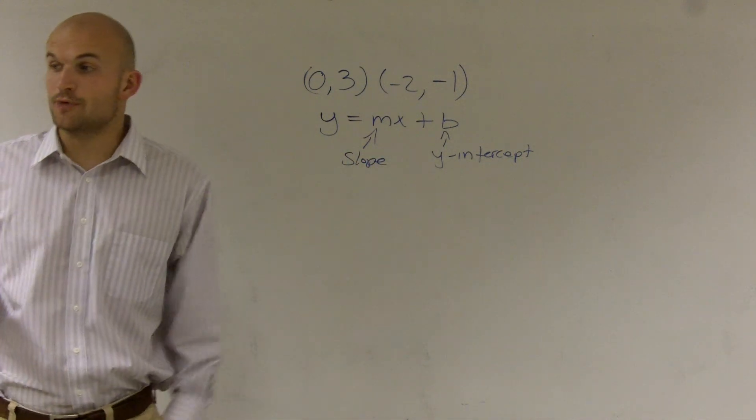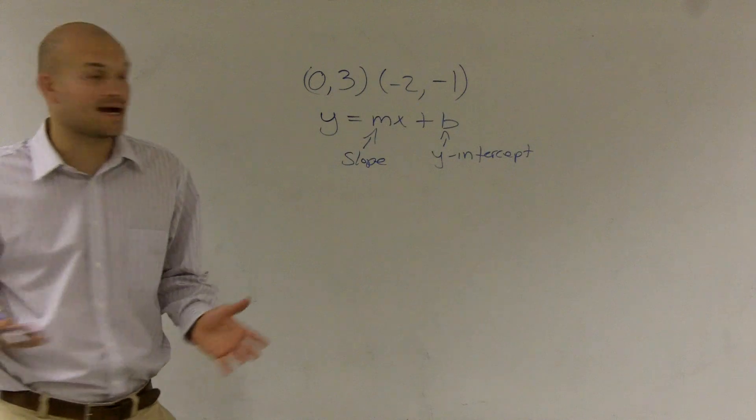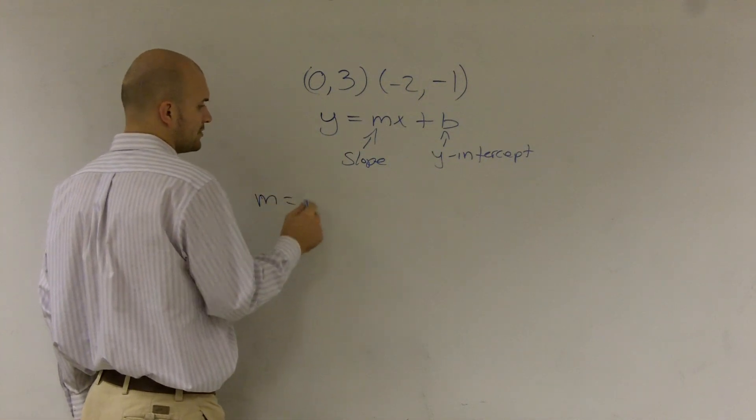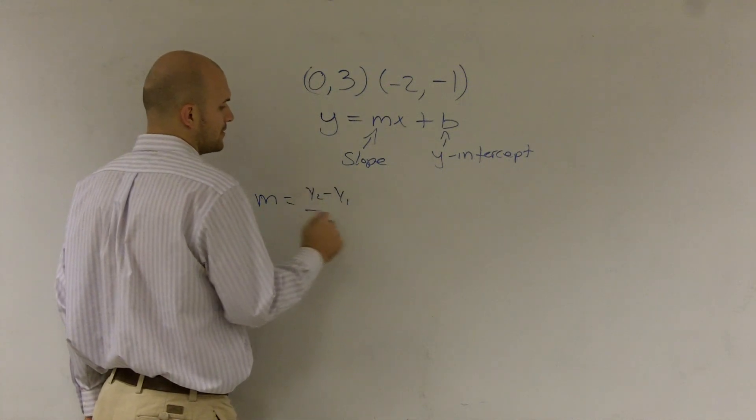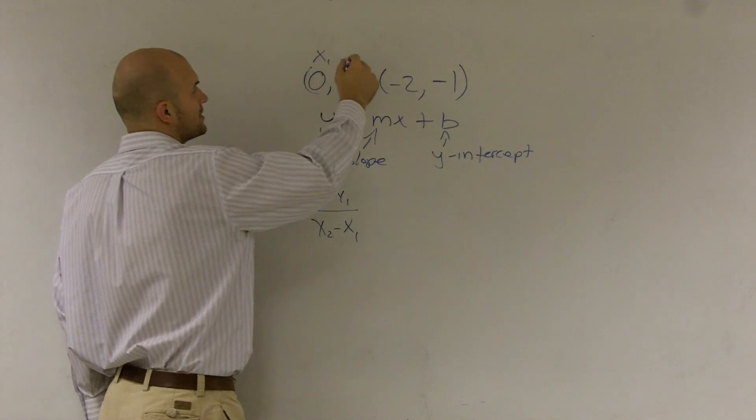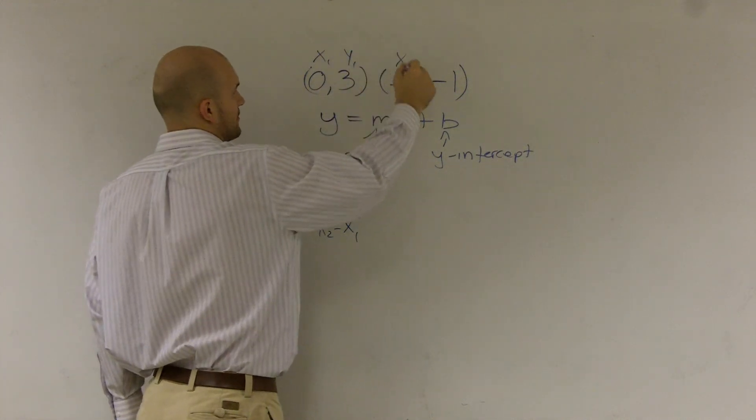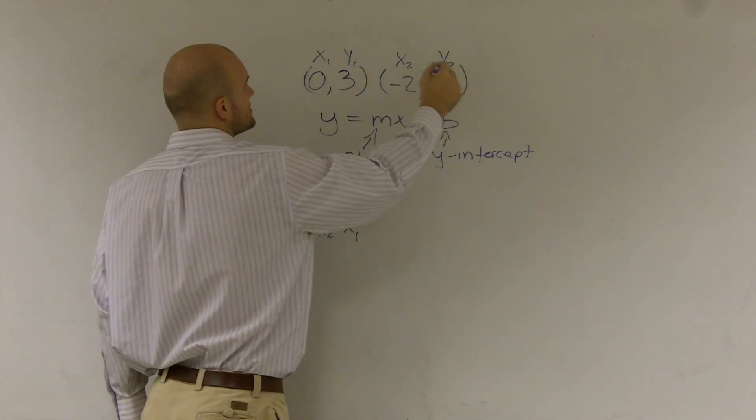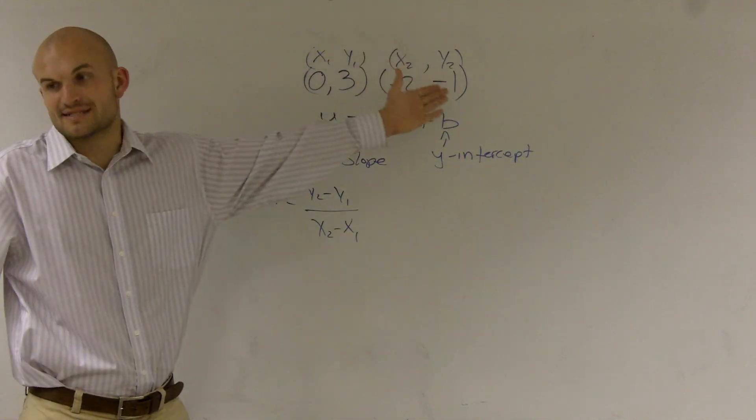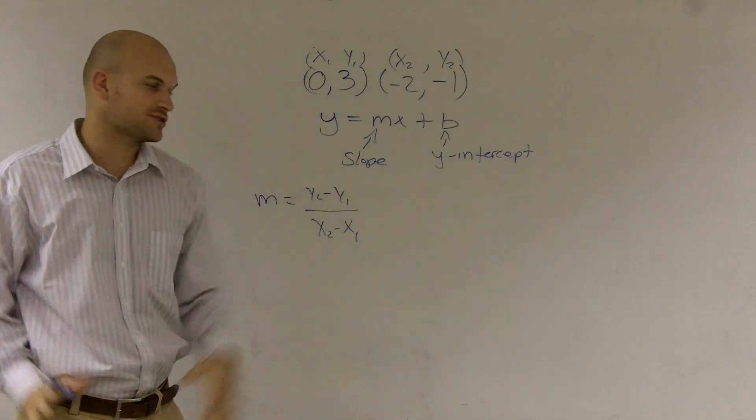So if I need to find the slope and I have two points, I obviously know that I can use my slope formula, which you remember m equals y2 minus y1 over x2 minus x1, where all I'm going to do is label my x and y's, or label my coordinates as x and y's. And I'll label one as x1 and one as x2, just to distinguish between the two of them.